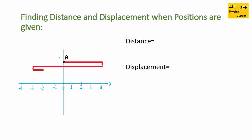Next example: finding distance and displacement when positions are given. A person starts from point A at position 0, travels to position 4, turns back to the origin, then moves in the negative direction to position minus 3, then turns back to position minus 2. To find distance, we add all segments: 0 to 4 is 4 meters, 4 to 0 is 4 meters, 0 to minus 3 is 3 meters, minus 3 to minus 2 is 1 meter. So 4 plus 4 plus 3 plus 1 equals 12 meters.